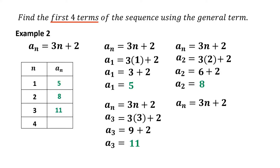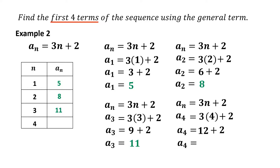Lastly, the fourth term using a sub n equals 3n plus 2. Substitute n equals 4: a sub 4 equals 3 times 4 plus 2 equals 12 plus 2 equals 14. Therefore, the fourth term is 14. The first four terms are 5, 8, 11, and 14.